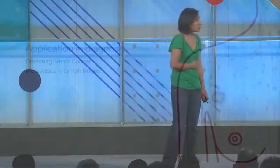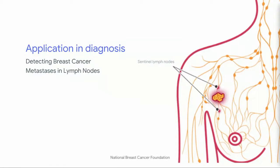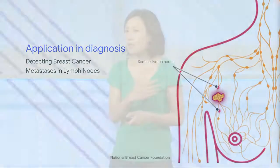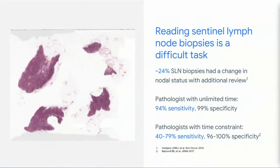Here's an application in diagnosis we're working on. We're talking about breast cancer — specifically, metastases of breast cancer into nearby lymph nodes. When a patient is diagnosed with breast cancer and the primary tumor is removed, the surgeon takes out lymph nodes to examine whether the cancer has metastasized. That has an impact on how you treat the patient. Reading these lymph nodes is not an easy task. In fact, about 20 to 24 percent of biopsies, when reviewed, had a change in node status — meaning a positive was read as negative or vice versa.